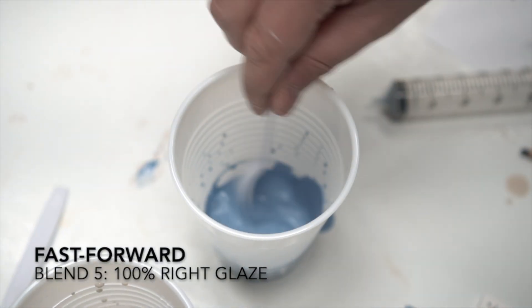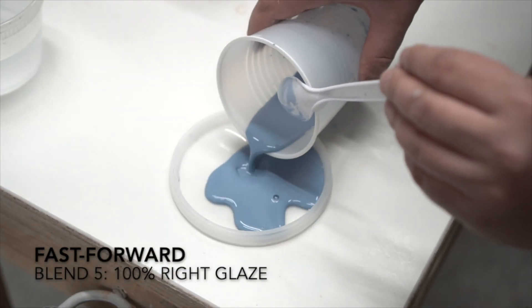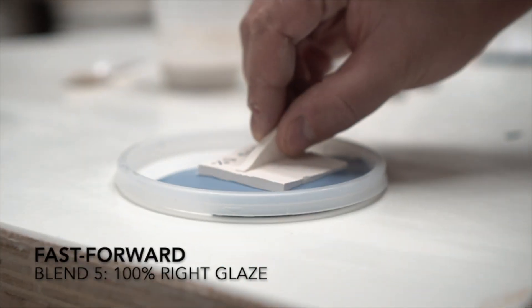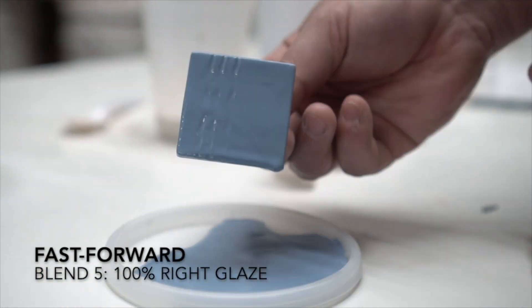Our final test tile will only have the right glaze. So all we have to do is pour the right glaze into the container lid and then dip the test tile.